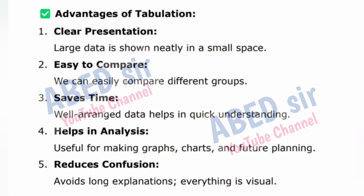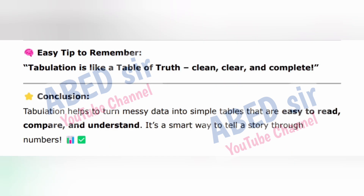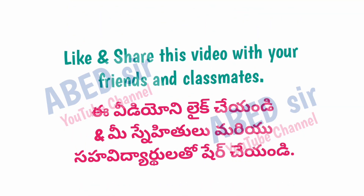Advantages of tabulation: 1. Clear presentation — large data is shown neatly in a small space. 2. Easy to compare — we can easily compare different groups. 3. Saves time — well-arranged data helps in quick understanding. 4. Helps in analysis — useful for making graphs, charts, and future planning. 5. Reduces confusion — avoids long explanations; everything is visual. Easy tip: Tabulation is like a table of truth — clean, clear, and complete. Conclusion: Tabulation helps turn messy data into simple tables that are easy to read, compare, and understand.